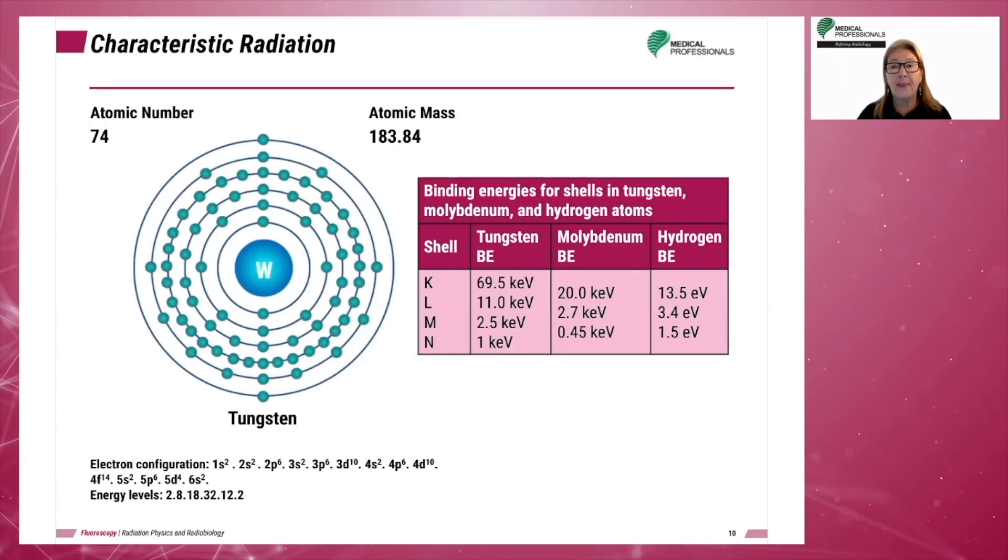Again, to produce characteristic radiation, the energy of the incoming electron must be sufficient to eject an electron from the inner shell or K shell of the tungsten atom. The binding energy at the K shell is 69.5 keV. Characteristic radiation is only formed by an interaction at the K shell.